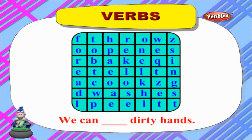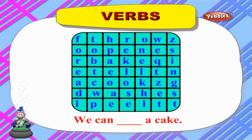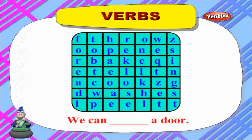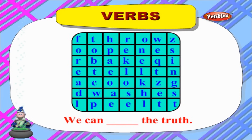Now let us find the suitable verb and fill in the blanks. 'We can ___ dirty hands' — 'wash' will be the apt word: we can wash dirty hands. 'We can ___ a cake' — the apt word is 'bake': we can bake a cake. 'We can ___ a meal' — the apt word is 'cook': we can cook a meal. 'We can ___ a door' — the apt word is 'open': we can open a door. 'We can ___ the truth' — the apt word is 'tell': we can tell the truth.